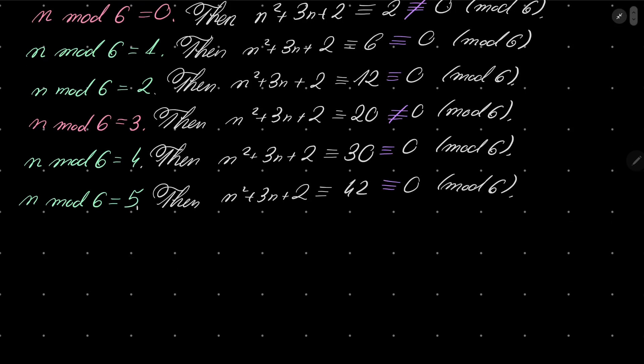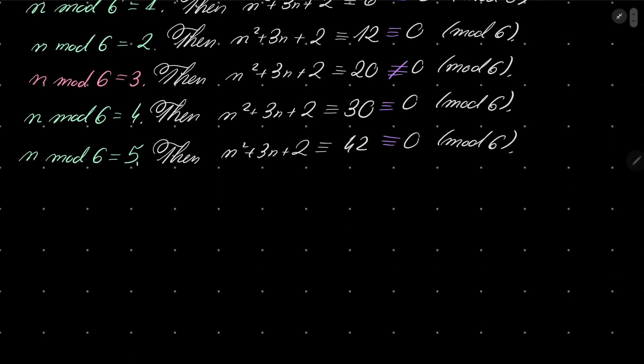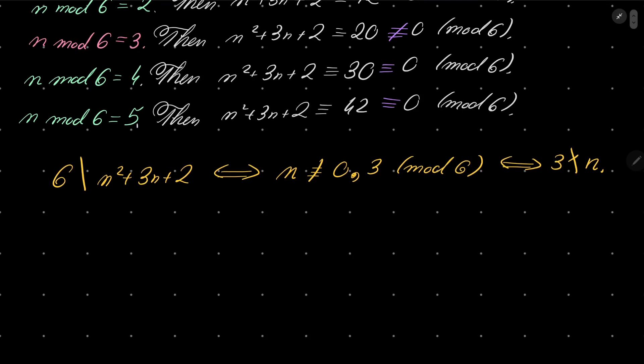So now we know that, in other words, we have established that 6 divides n² + 3n + 2 if and only if n is not congruent to 0 or 3 modulo 6, which happens when 3 does not divide n.